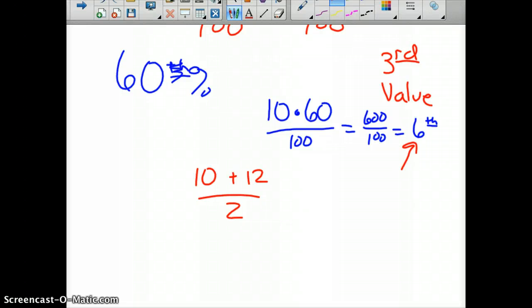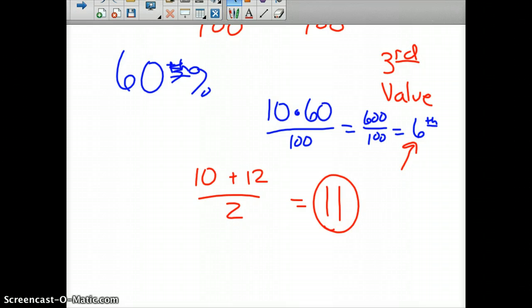So, our score would correspond to that 10 plus 12 divided by 2, the one halfway between them, between the 6th and the 7th. That's only if the value, your percentile rank ends up giving you an exact value. You find the 6th and the 7th one, if it was the 8th, you go to the 8th and 9th one, add them up and divide by 2. And so, an 11 on our test, 11 out of 20, would be the 60th percentile.